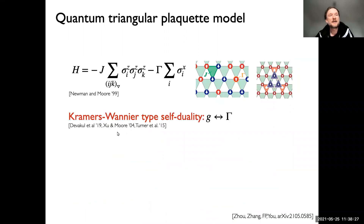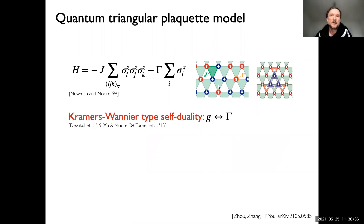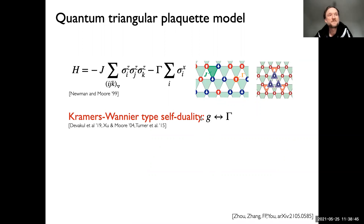A second observation is that this model has a Kramers-Wannier type self-duality. We can go to dual variables that live on the triangles, and we can show that this model is in fact self-dual.